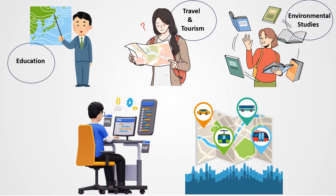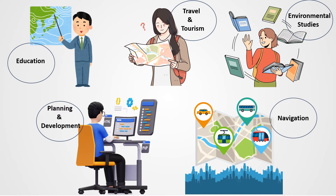Third, environmental studies — researchers and environmentalists use physical maps to study ecosystems, climate regions, and natural resources. Fourth, planning and development — urban planners and engineers use physical maps to assess land suitability for construction, agriculture, and other development based on terrain and physical features. Fifth is navigation — physical maps assist in navigation especially in areas where natural landmarks are critical for orientation, such as wilderness areas and large water bodies.